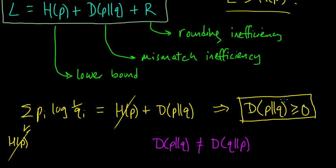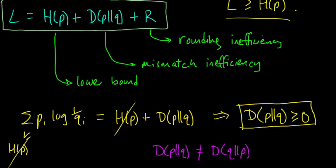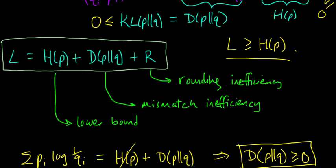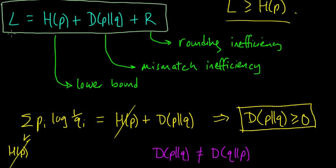Even though it's not actually a distance metric, it can often be used in lieu of one, as it behaves somewhat like a distance metric. You can think about relative entropy as quantifying, heuristically speaking, the distance between two probability distributions. That intuitive interpretation holds in our example here — when P is very close to Q, when our estimates are very good, the mismatch inefficiency should be smaller. But you should always bear in mind that it's not a true distance, because it's not symmetric, and symmetry is one of the required properties of a distance metric.